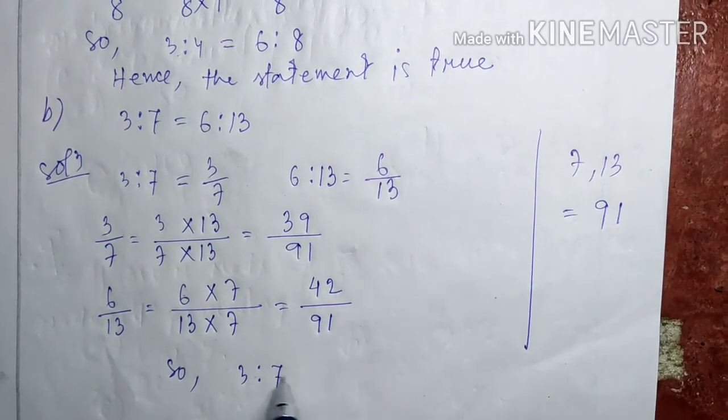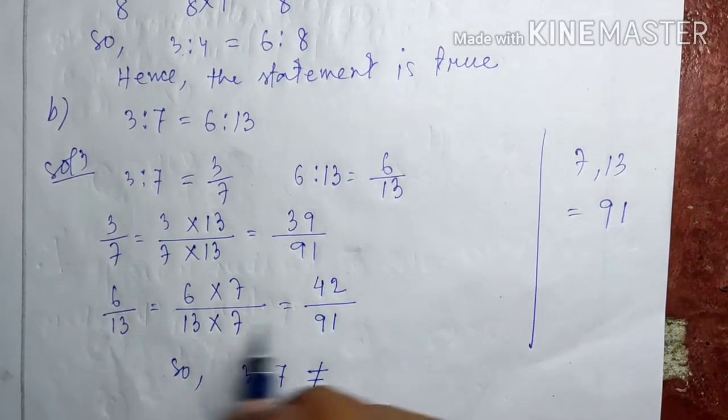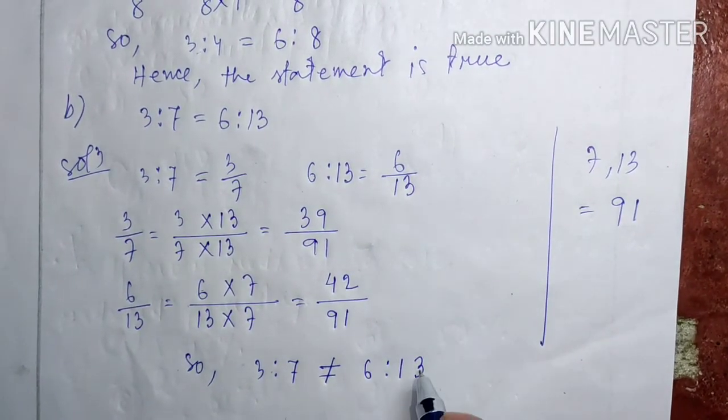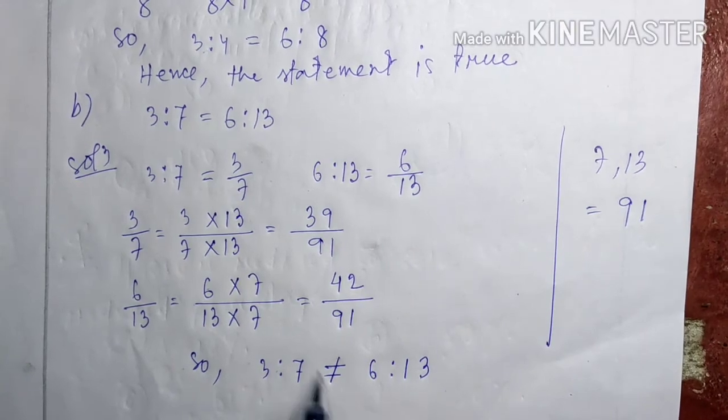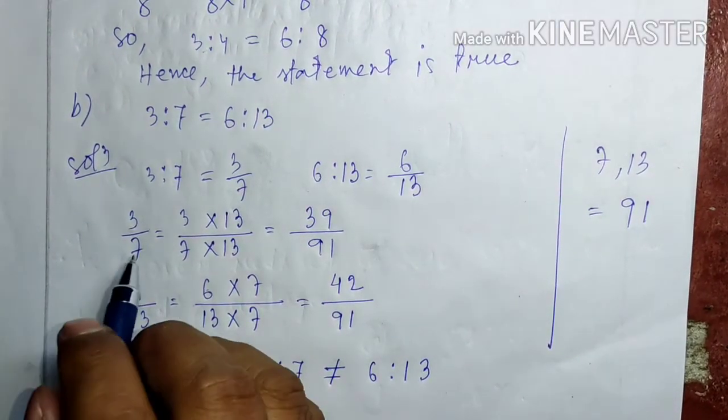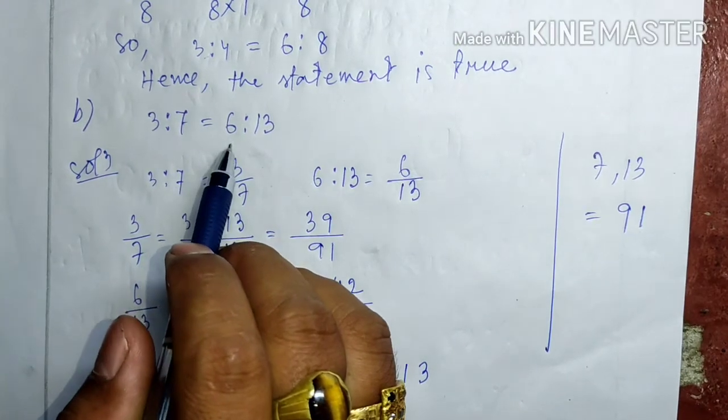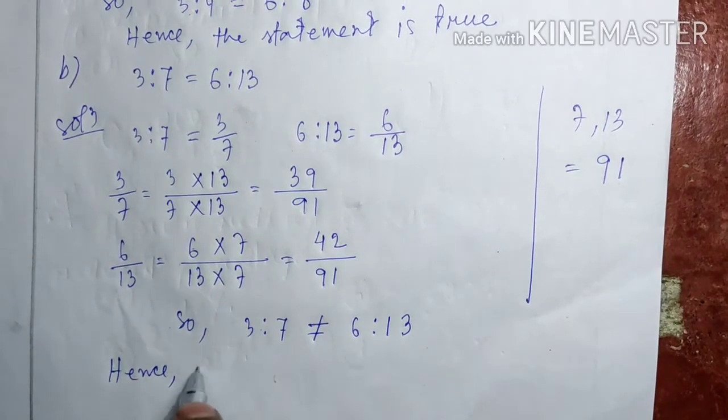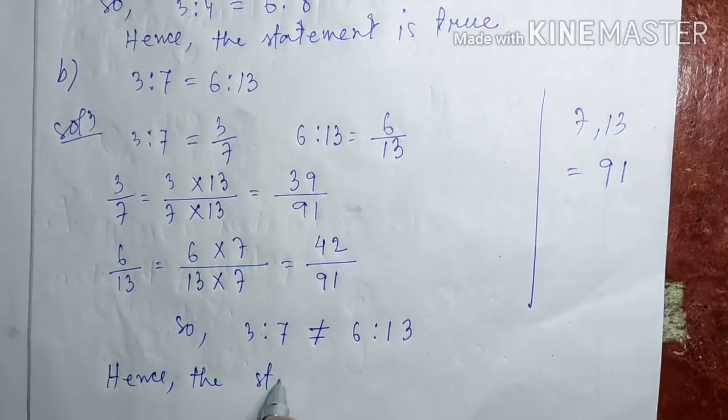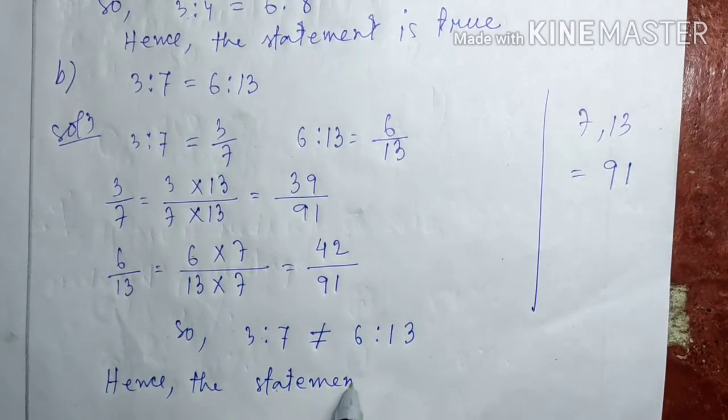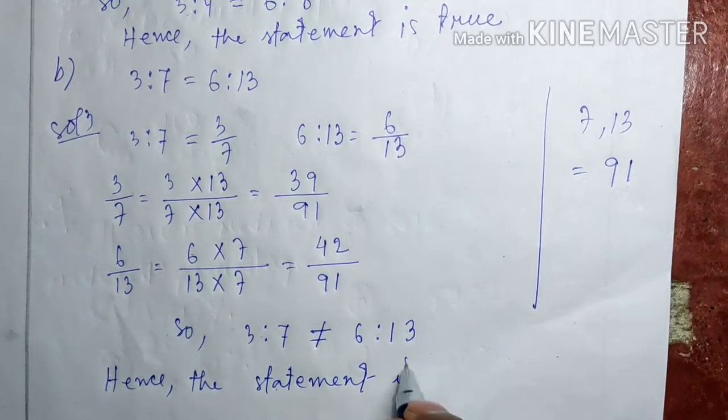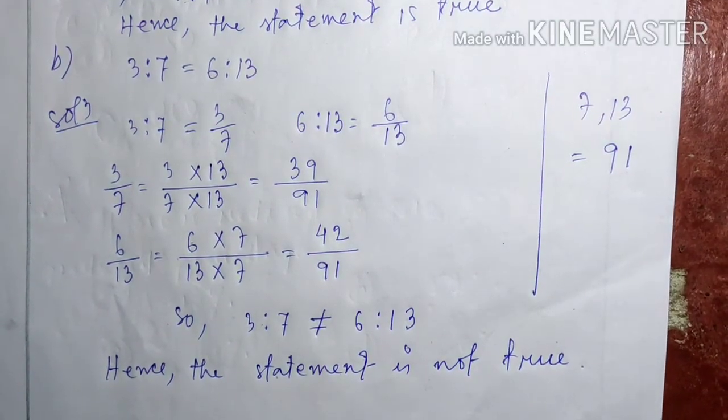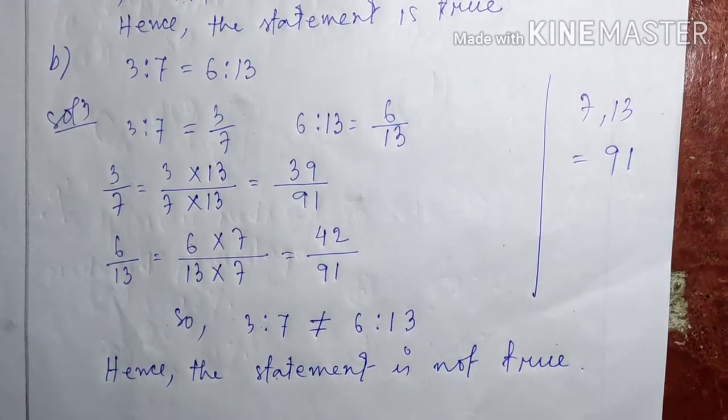3 is to 7 is not equal to 6 is to 13. They are not equal. Hence, the statement is false.